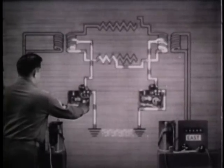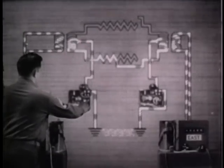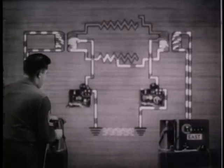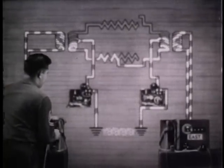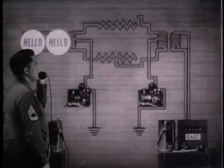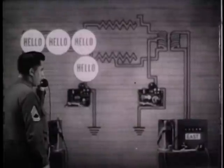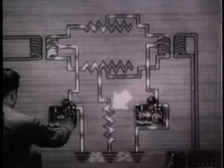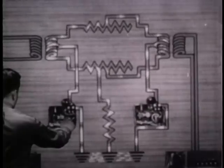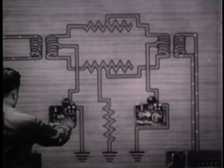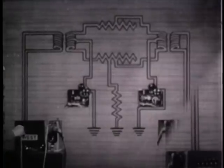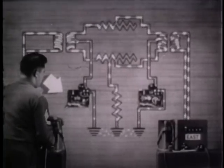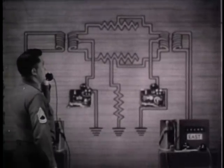When one wire is open, telegraph is still okay. Ringing current gets through too, but interferes with the telegraph channel. Voice current is blocked. When one wire is grounded, both channels are generally still usable. Telegraph current is weakened though, and interferes with the telephone. Ringing current is also weakened, and may interfere with the telegraph. Voice current is unaffected.